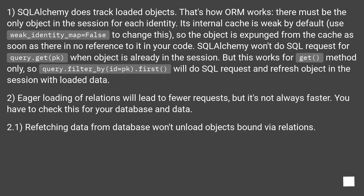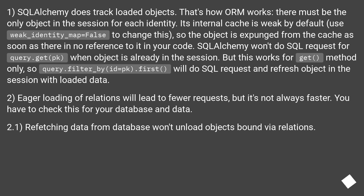Update. 1: SQLAlchemy does track loaded objects — that's how ORM works; there must be only one object in the session for each identity. Its internal cache is weak by default; use weak_identity_map=False to change this, so the object is expunged from the cache as soon as there is no reference to it in your code. SQLAlchemy won't issue a SQL request for query.get(pk) when the object is already in the session.